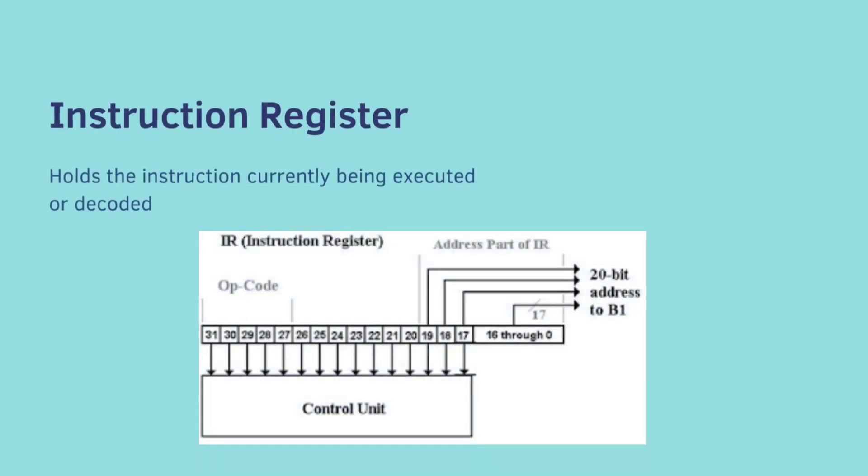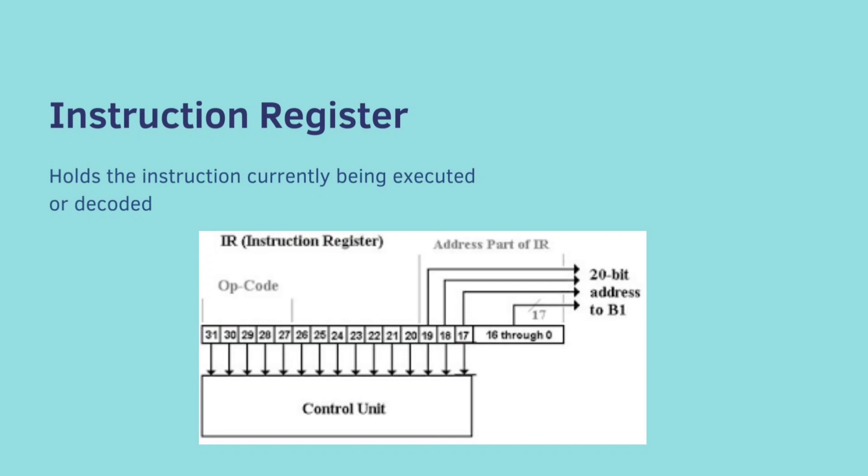Instruction Register is the part of CPU's control unit that holds the instruction currently being executed or decoded. Some complicated processors use a pipeline of instruction registers where each stage of the pipeline does part of decoding, preparation or execution and then passes it to the next stage for the steps.